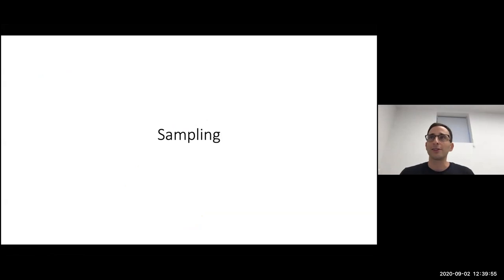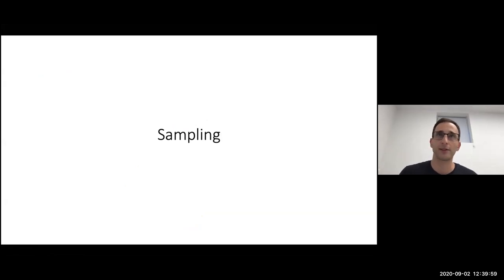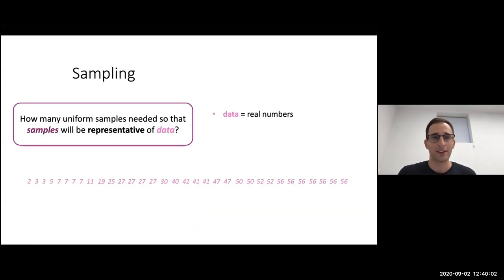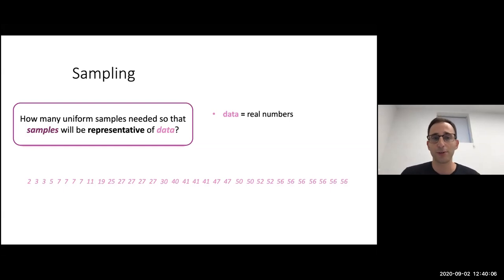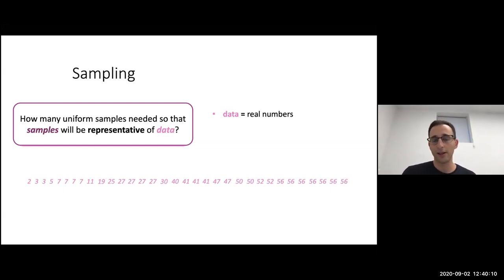Now I want to talk about sampling and connect it back to adversarial streaming. So: how many uniform samples do I need to take so that my sample is a good representative of my data?